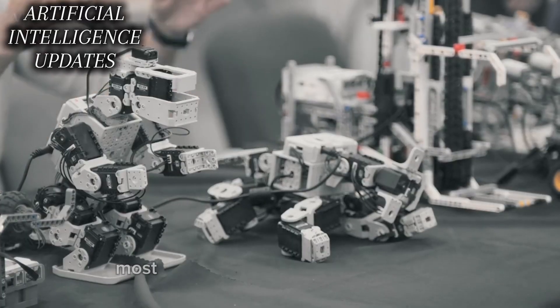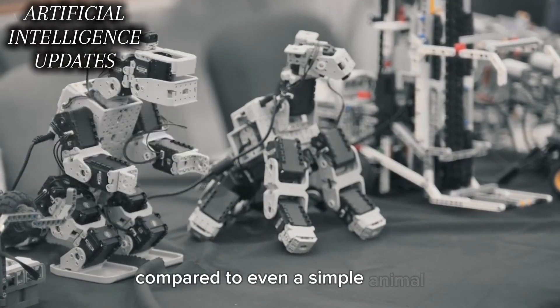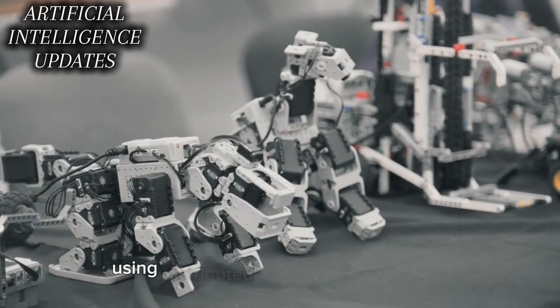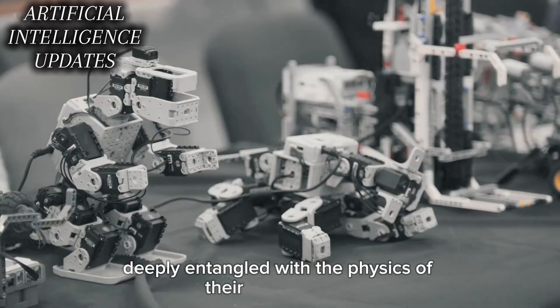However, most existing robots are still incredibly clumsy and inefficient compared to even a simple animal nervous system's ability to coordinate dexterous movement using distributed sensorimotor control loops deeply entangled with the physics of their embodiment.